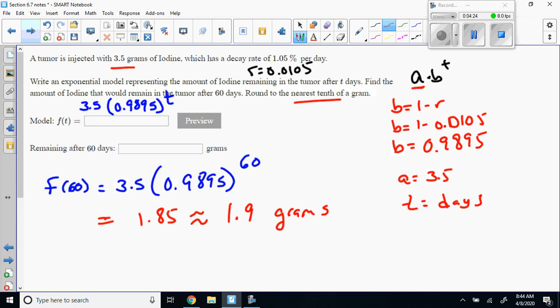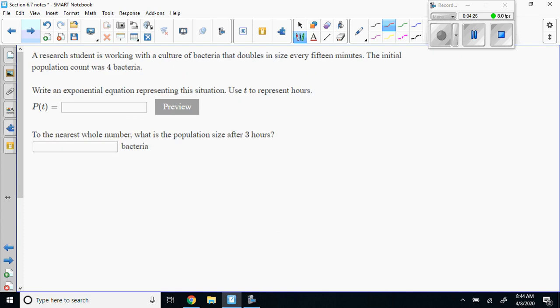A research student is working with a culture of bacteria that doubles in size every 15 minutes. The initial population count was 4 bacteria. Here's your a times b raised to the t. It doubles, so the b is 2, but it doubles every 15 minutes.